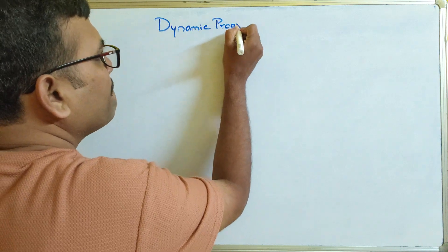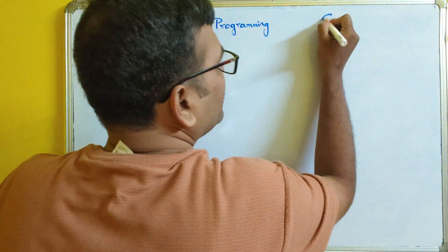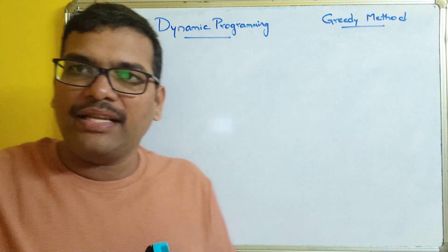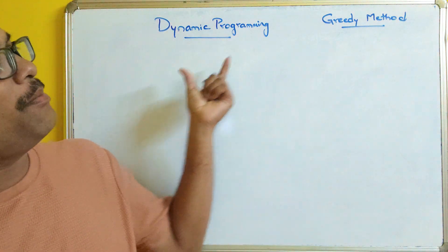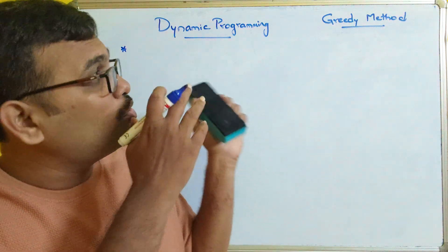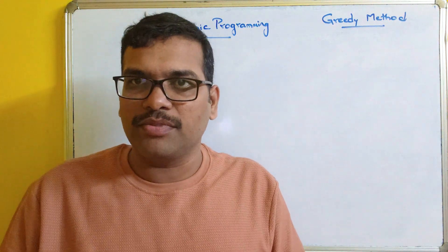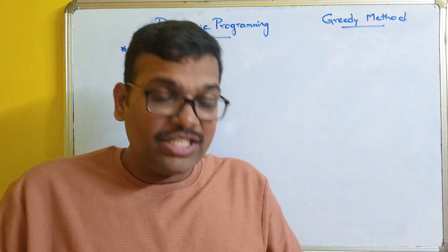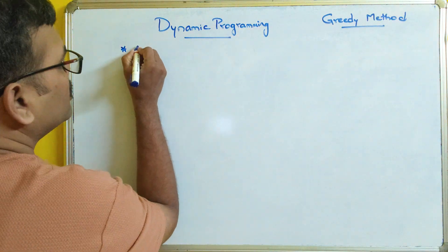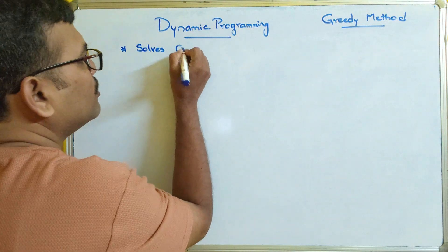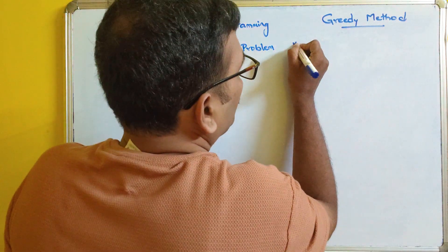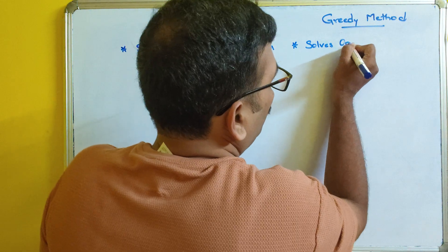The first one is dynamic programming and the second one is greedy method. The first difference is which kind of problems we use each approach for. Both approaches can be used to solve optimization problems — where the problem should have an optimal solution, we use dynamic programming or the greedy method.